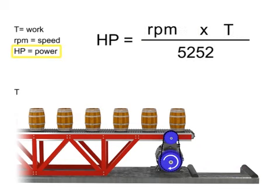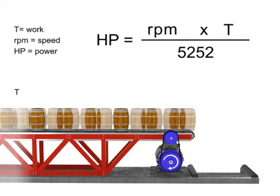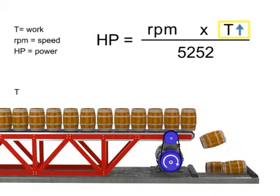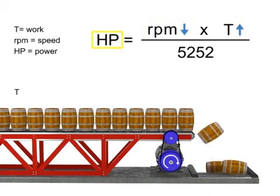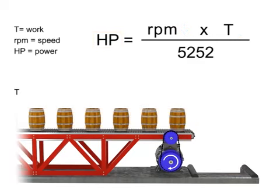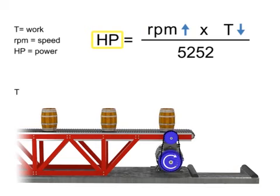If horsepower remains constant, then speed and torque are inversely proportional. As the torque increases, speed decreases to maintain constant horsepower. As torque decreases, speed must increase to maintain constant horsepower. Let's say we want the horsepower of our motor to remain constant, but wish to increase the torque. If torque increases, the speed of the conveyor decreases so that the horsepower required of the motor remains constant. If the torque decreases, the speed of the conveyor increases and the horsepower remains constant.